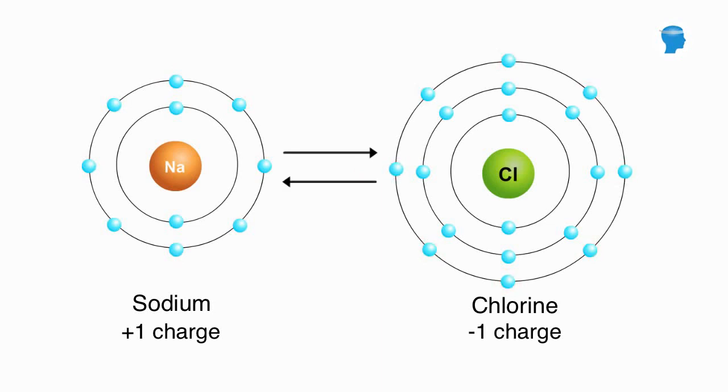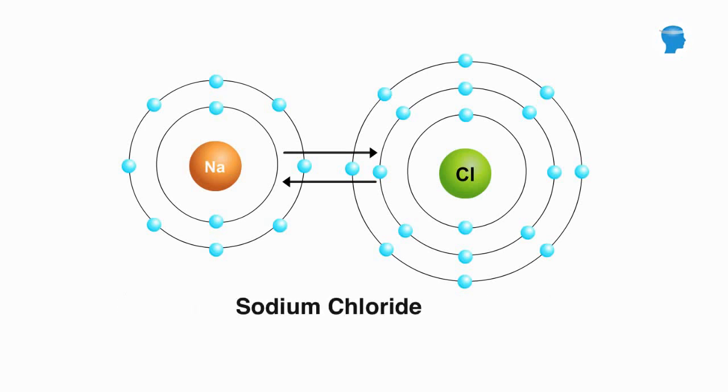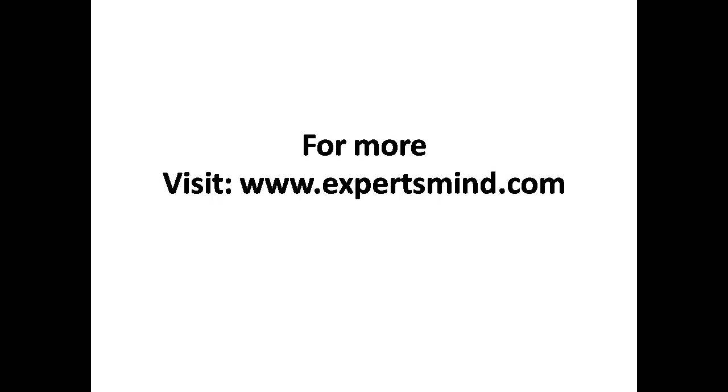The charged sodium and chlorine atoms are called ions. Ions of opposite charge attract each other and form ionic bonds. In this case, the attraction of sodium and chlorine form a molecule called sodium chloride, or table salt.